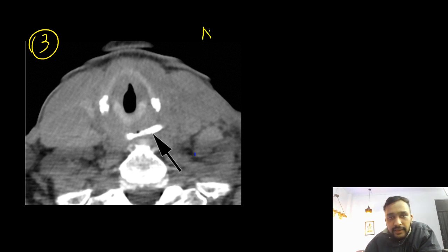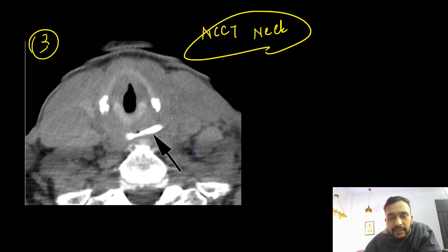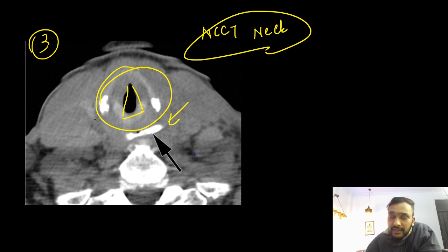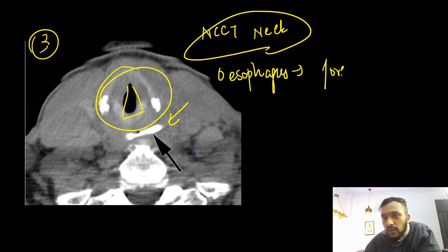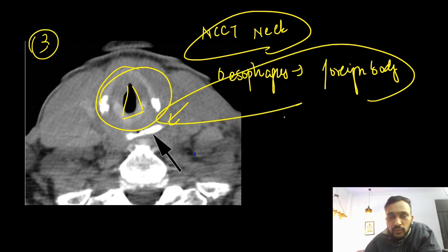Here is another NCCT image of the neck. You can see that there is some hyperdense structure that is lying just behind the larynx. Just behind the larynx you have your esophagus, and within this esophagus this hyperdense structure is most likely a foreign body — and this was a fish bone.